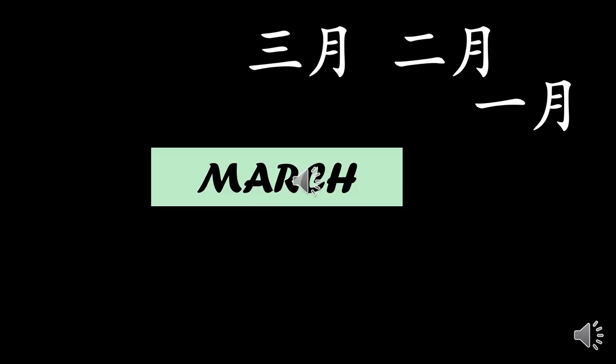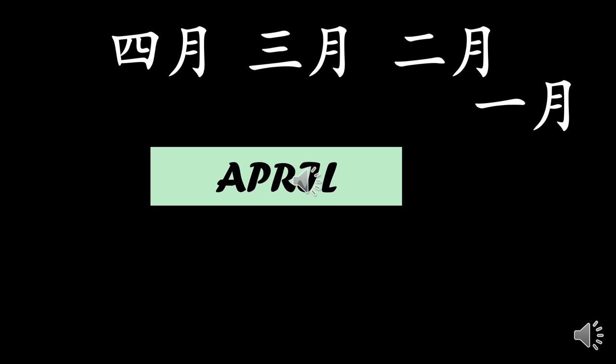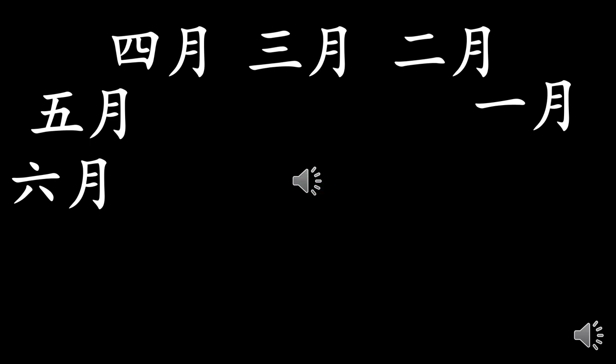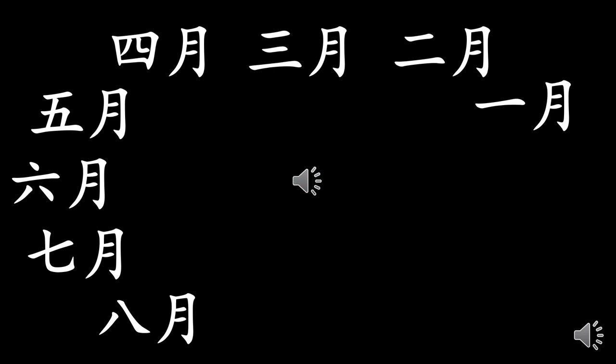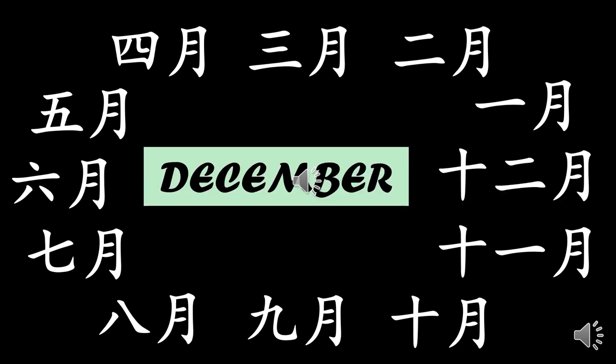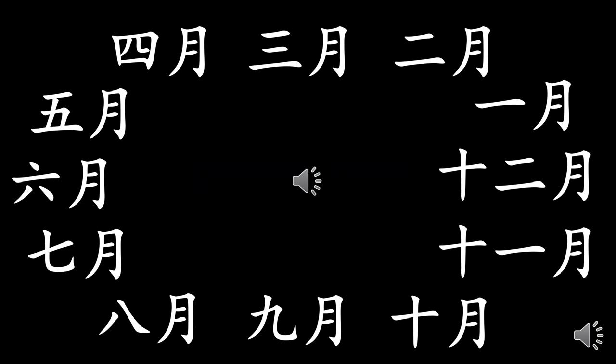Months in Chinese are easy to learn because there are only 12 months in a year. Following the sequence: 一月 is January, 二月 is February, 三月 is March, 四月 is April, 五月 is May, 六月 is June, 七月 is July, 八月 is August, 九月 is September, 十月 is October, 十一月 is November, and 十二月 is December.